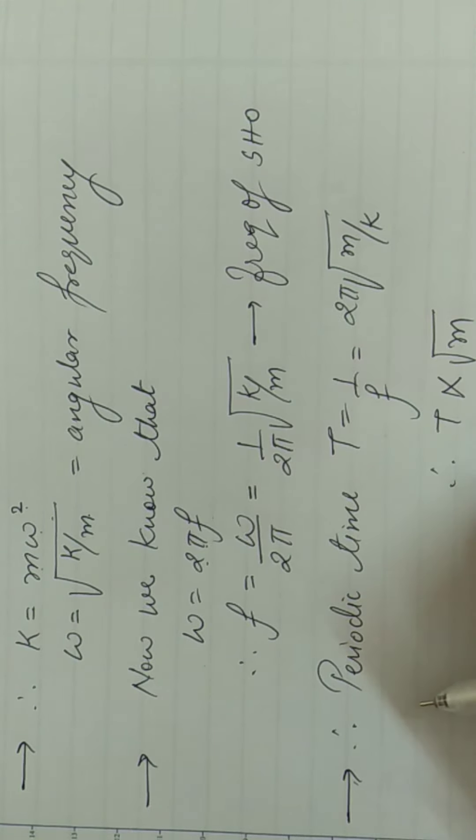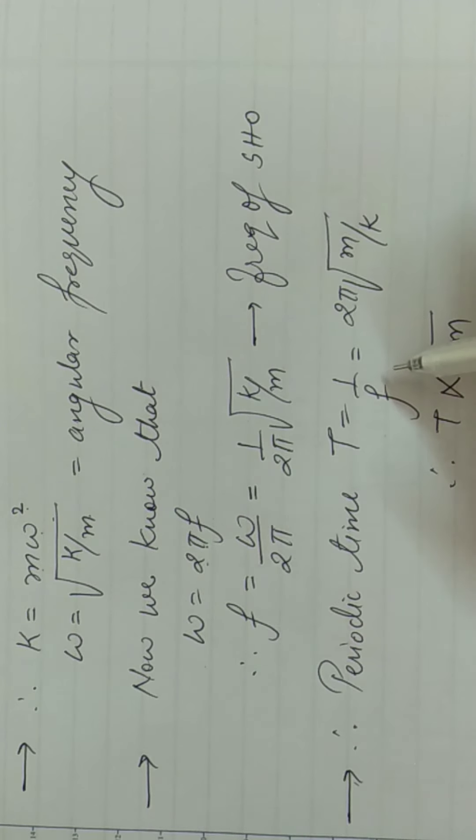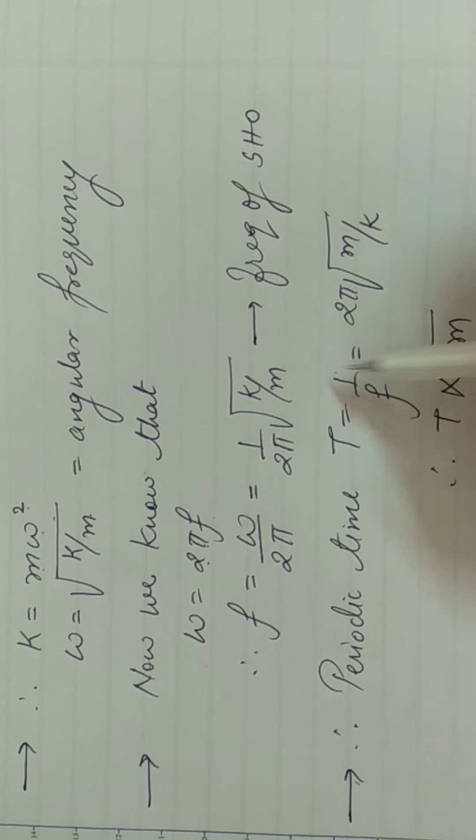Ab periodic time obtain kar te hai. Toh agar aapko frequency mil jati hai, toh ap periodic time easily obtain kar sakte ho. Because periodic time is equals to 1 upon f hota hai. Ye apne 9th mein bhi pada hai, right? So agar aapko frequency mil jai, toh periodic time obtain kar sakte hai.